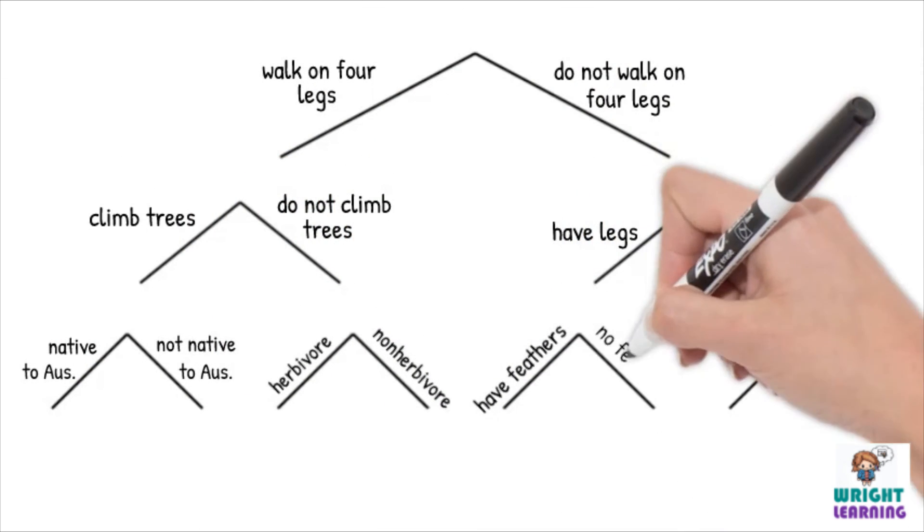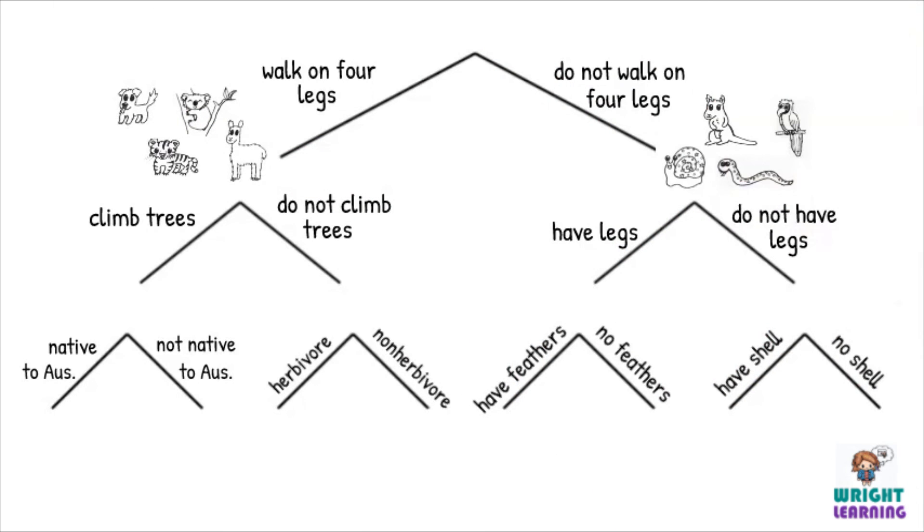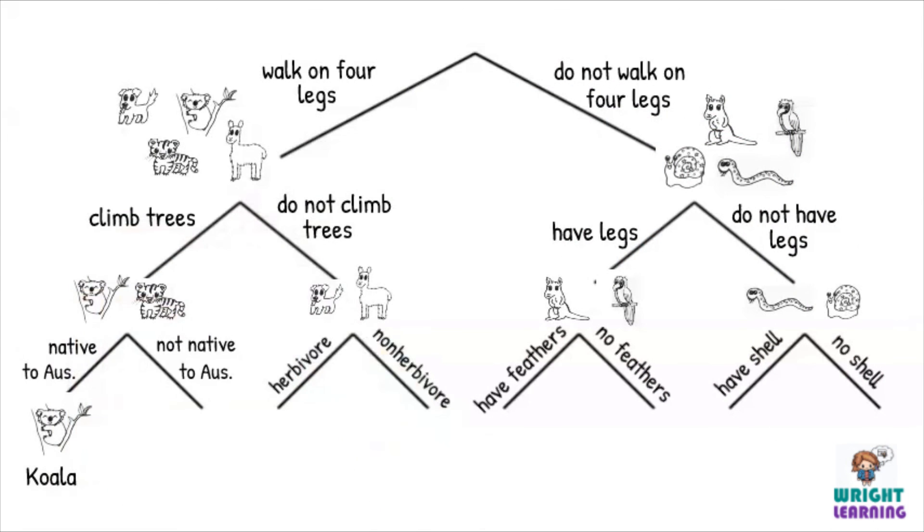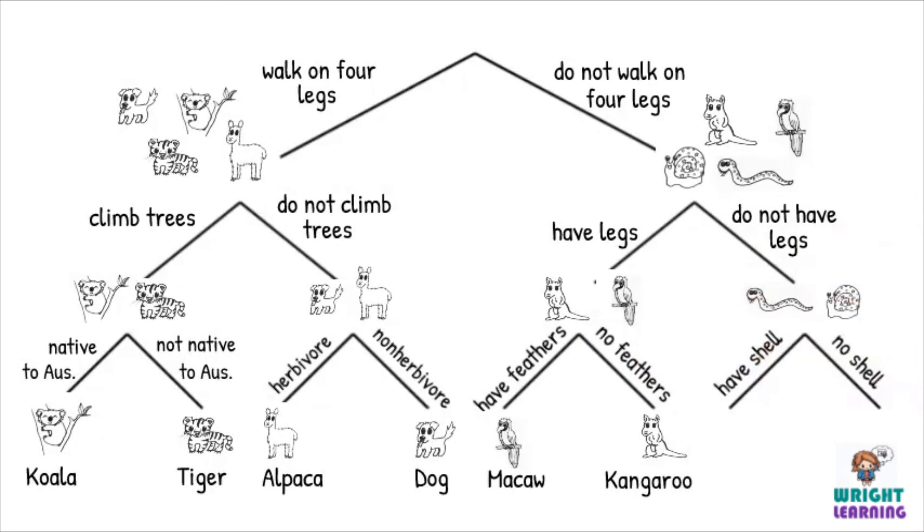and you can use the dichotomous key to identify the organism. Starting at the top, use the organism you chose to check on the written dichotomous key, and make sure the tree diagram version of the dichotomous key also produces the expected result. Now you're ready to try constructing your own dichotomous key. Good luck!